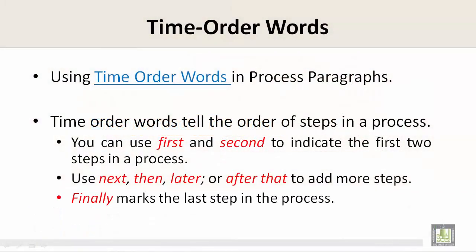Time order words. Using time order words in process paragraphs. Time order words tell the order of steps in a process. You can use 'first' and 'second' to indicate the first two steps in a process. Use 'next,' 'then,' 'later,' or 'after that' to add more steps. 'Finally' marks the last step in the process.